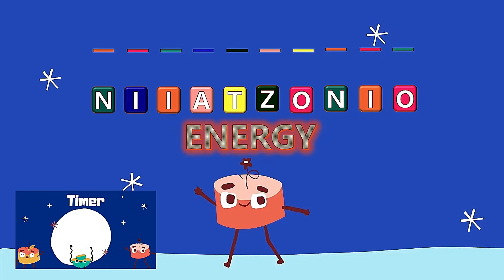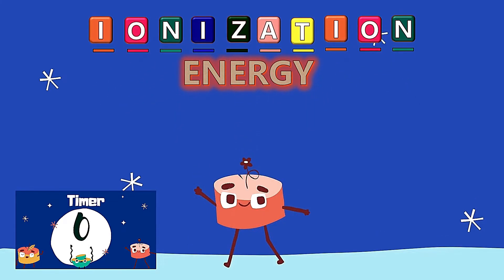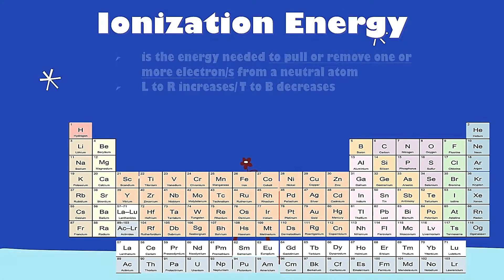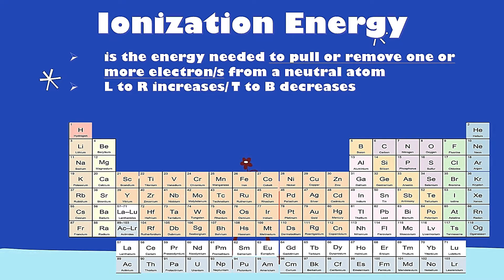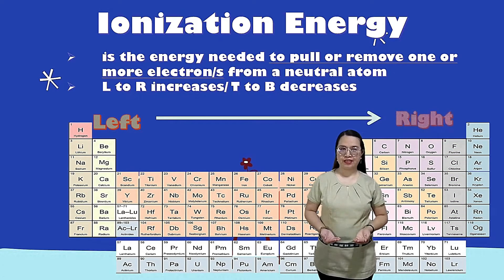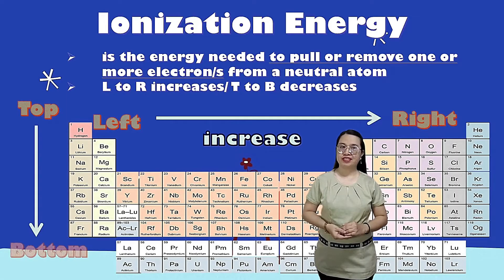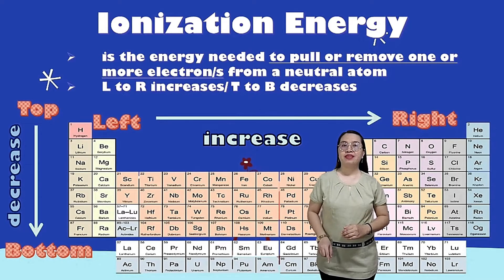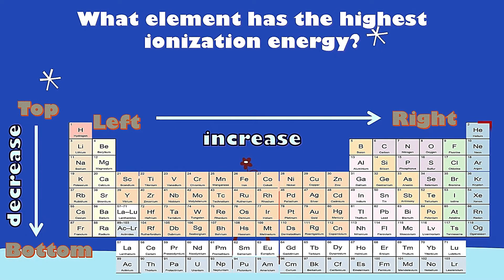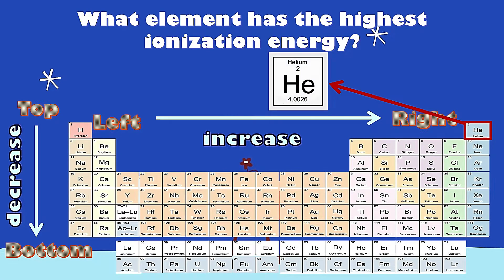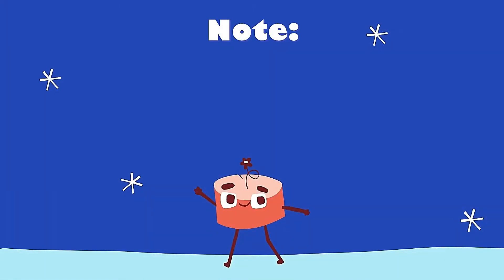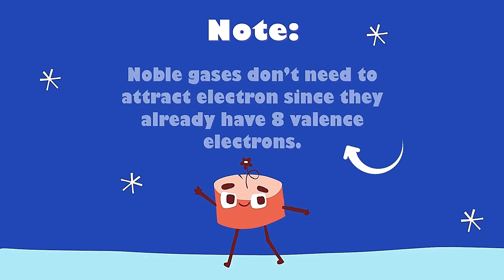Can you guess these jumbled letters? Very good! It's ionization energy. What is ionization energy? Ionization energy is the energy needed to pull or remove one or more electrons from a neutral atom. Same with electronegativity — from left to right it increases, and from top to bottom it decreases. What element has the highest ionization energy? Very good! It's helium. Remember that noble gases don't need to attract electrons since they already have 8 valence electrons.